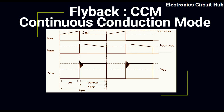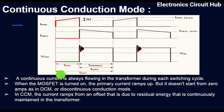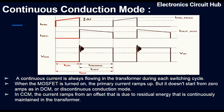In the CCM mode of flyback topology, a continuous current is always flowing in the transformer during each switching cycle. What does it mean? It means that the transformer doesn't completely demagnetize — it has some residual energy left on it.